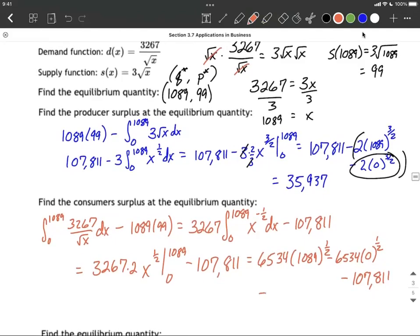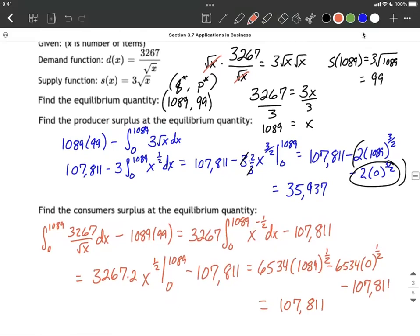Well, this all works out to be the same thing as the square root there, 107,811 by chance. Alright, so that is going to go as our consumer surplus for this problem. It doesn't always work out to be the exact same as the equilibrium point quantity and price multiplied together. It just happened to in this one.